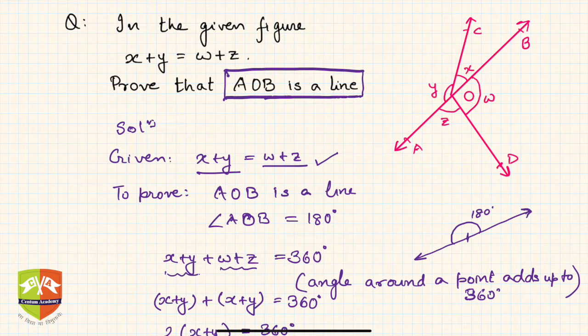And hence you can prove that a given geometric element is a line. Thank you.